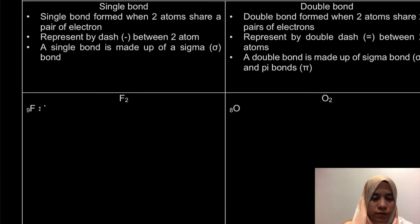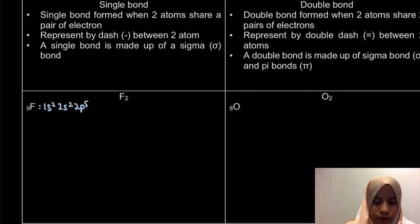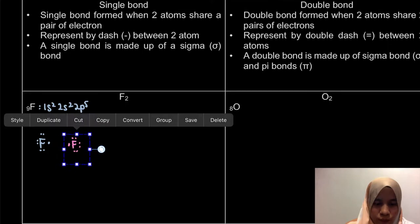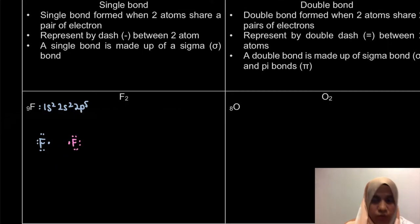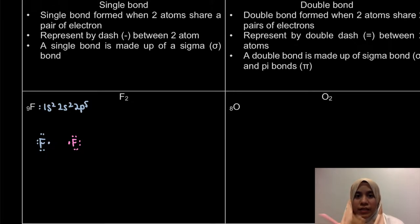So the electronic configuration here — in this case it's actually between two fluorine atoms. For the fluorine atom, the two fluorine atoms share their electrons. For the case of ionic bonding, one of the atoms, specifically the metal, donates the electron. But for covalent bonding between non-metals, the atoms share the electron.